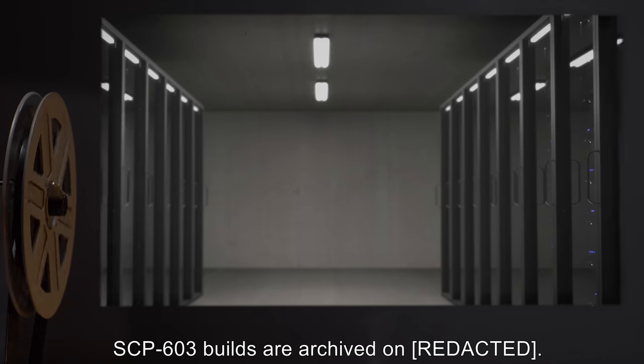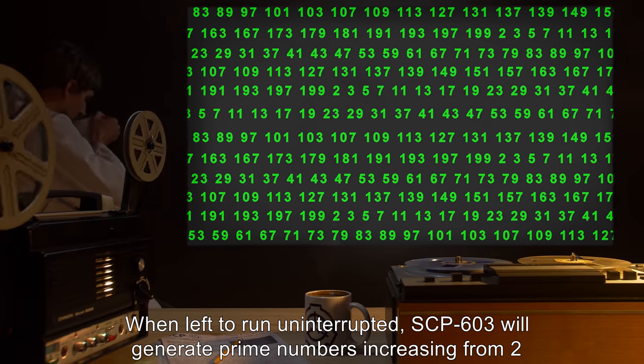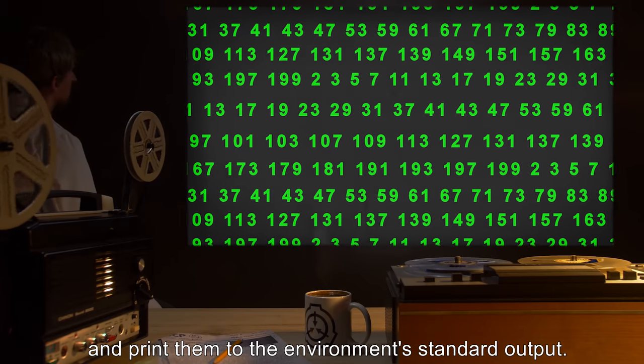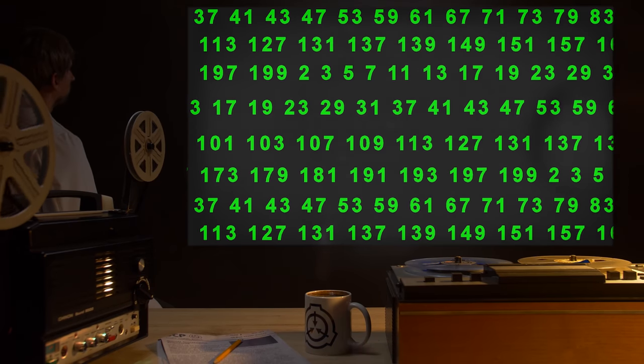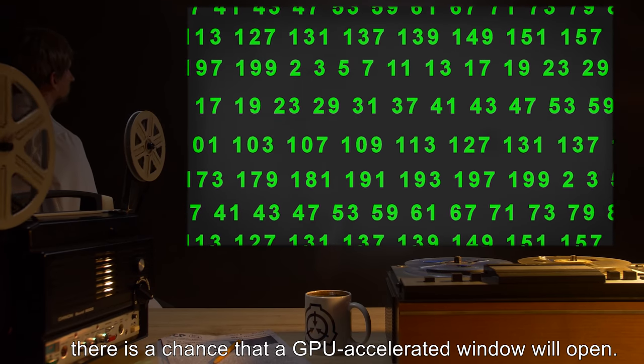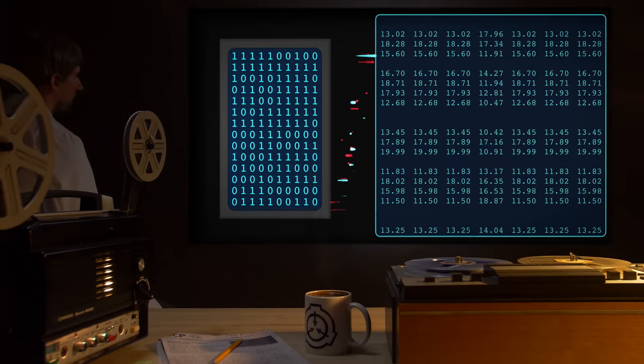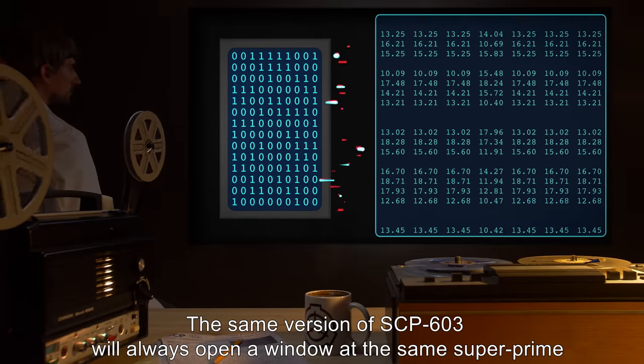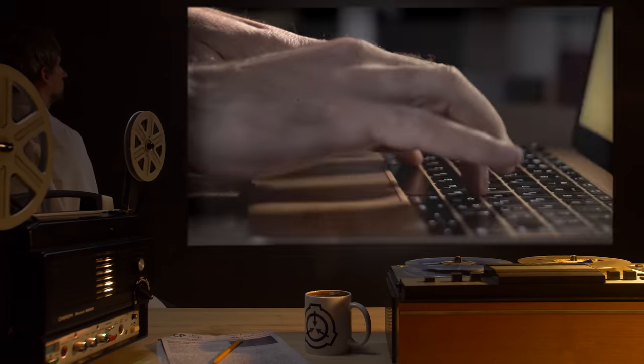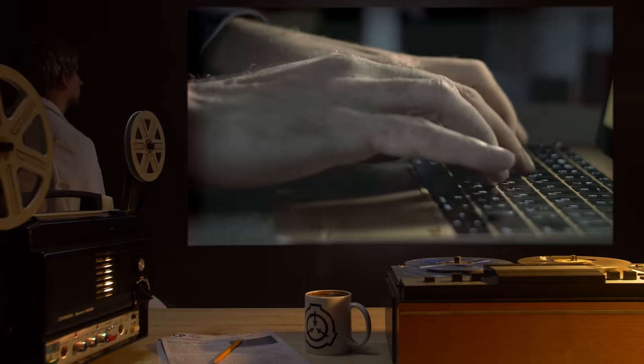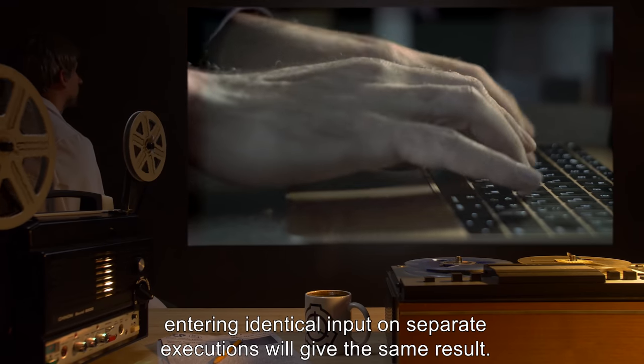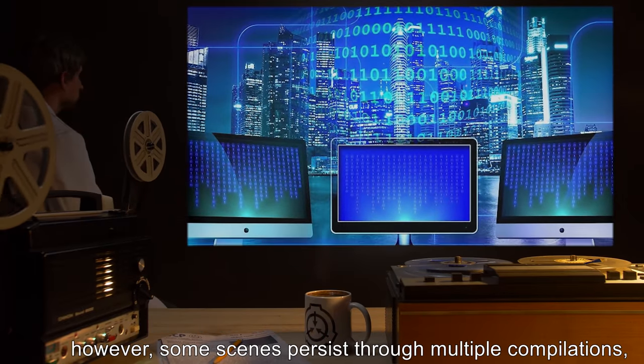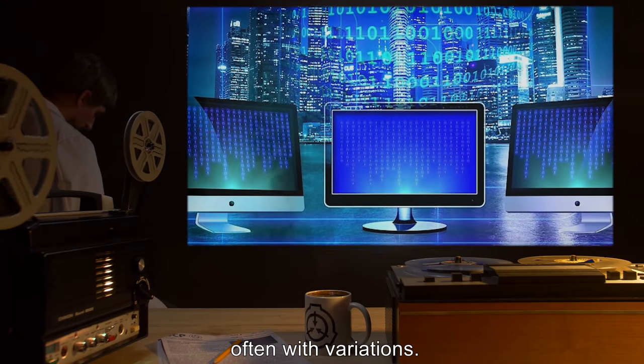When left to run uninterrupted, SCP-603 will generate prime numbers, increasing from 2, and print them to the environment's standard output. Upon hitting a superprime, there is a chance that a GPU-accelerated window will open. The contents of this window are varying. This process is deterministic. The same version of SCP-603 will always open a window at the same superprime and display the same scene. Some scenes persist through multiple compilations, often with variations.